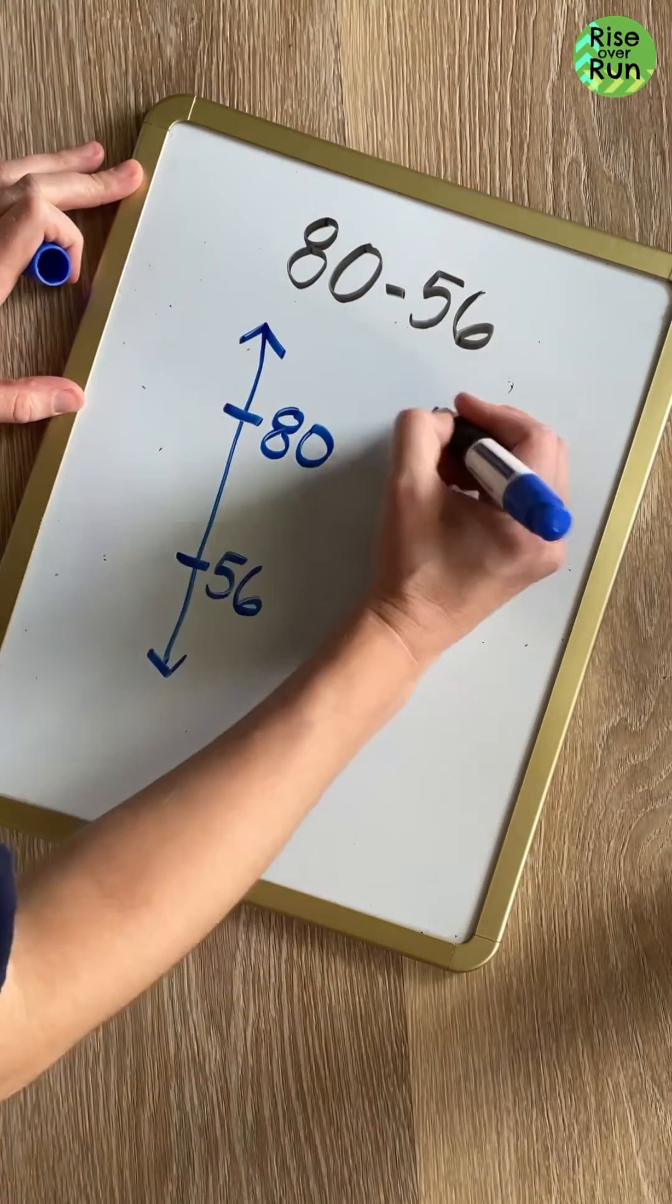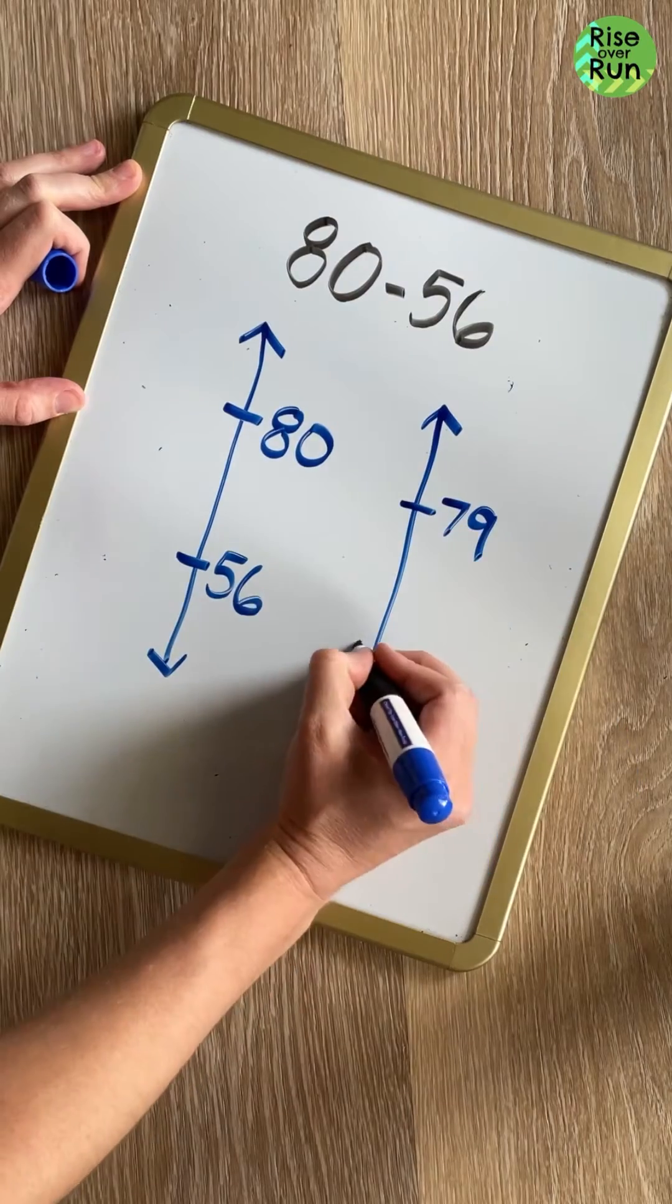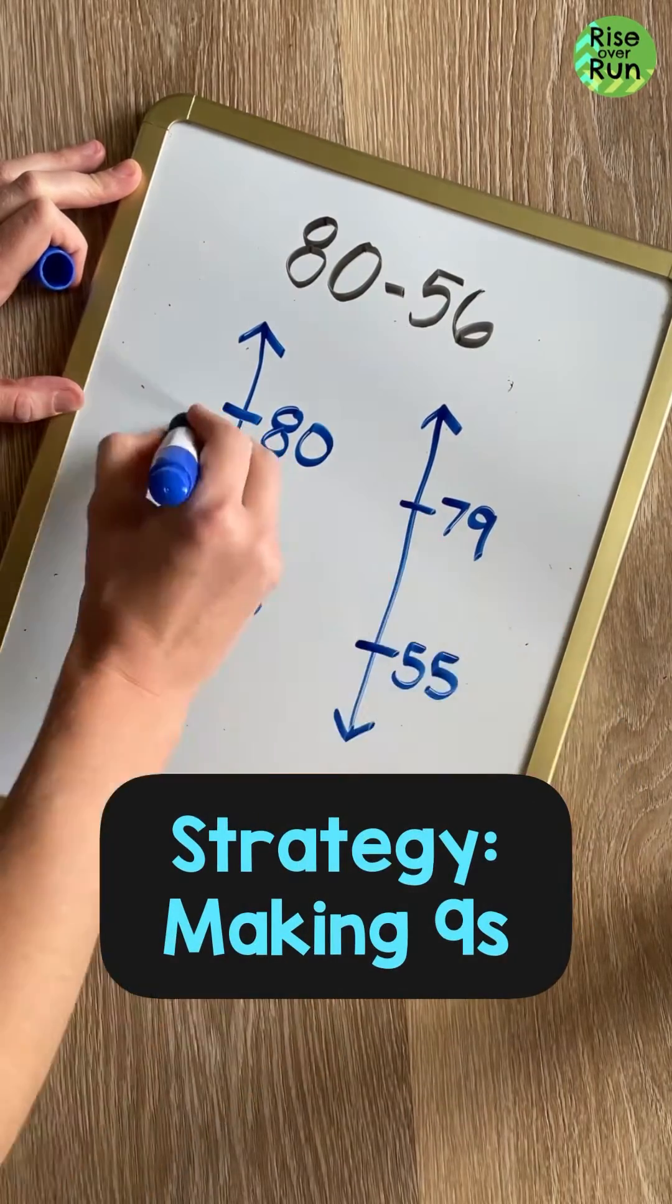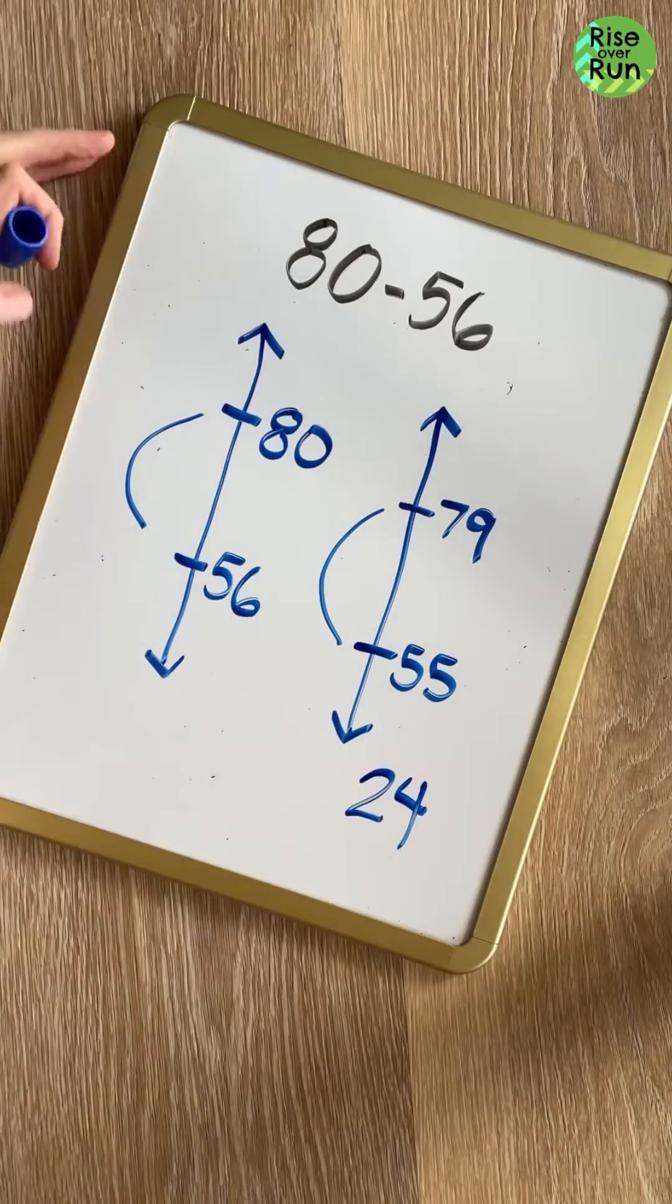Next, I'm going to use a similar strategy thinking about distance, but this time I changed the problem to 79 minus 55. Same distance here, but I can do this mentally and get the answer of 24.